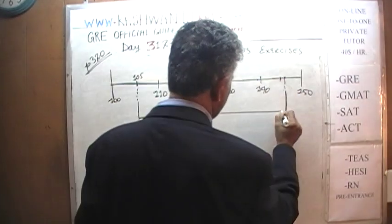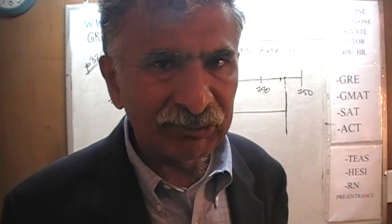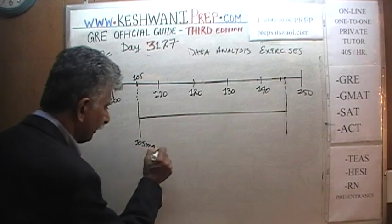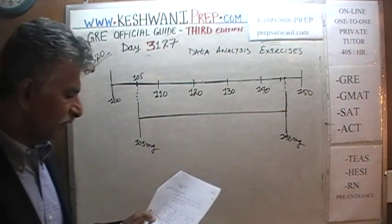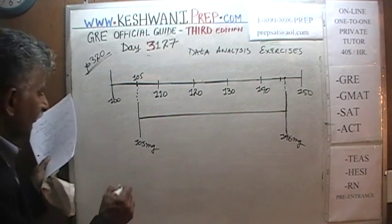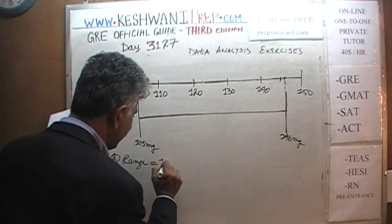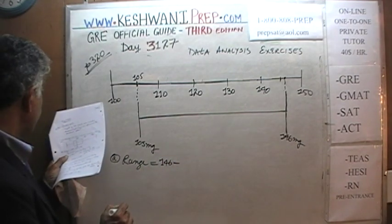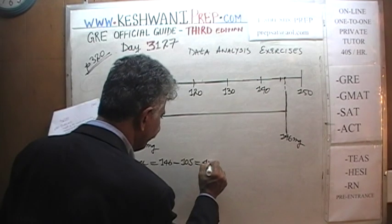The story begins here and ends here. It tells us that the lightest insect in the pool of 800 insects weighed 105 milligrams, and the heaviest insect weighed 146 milligrams. We have our answer to the first question: what is the range? The range is 146 minus 105. Since 146 minus 106 would have been exactly 40, the range is 41.